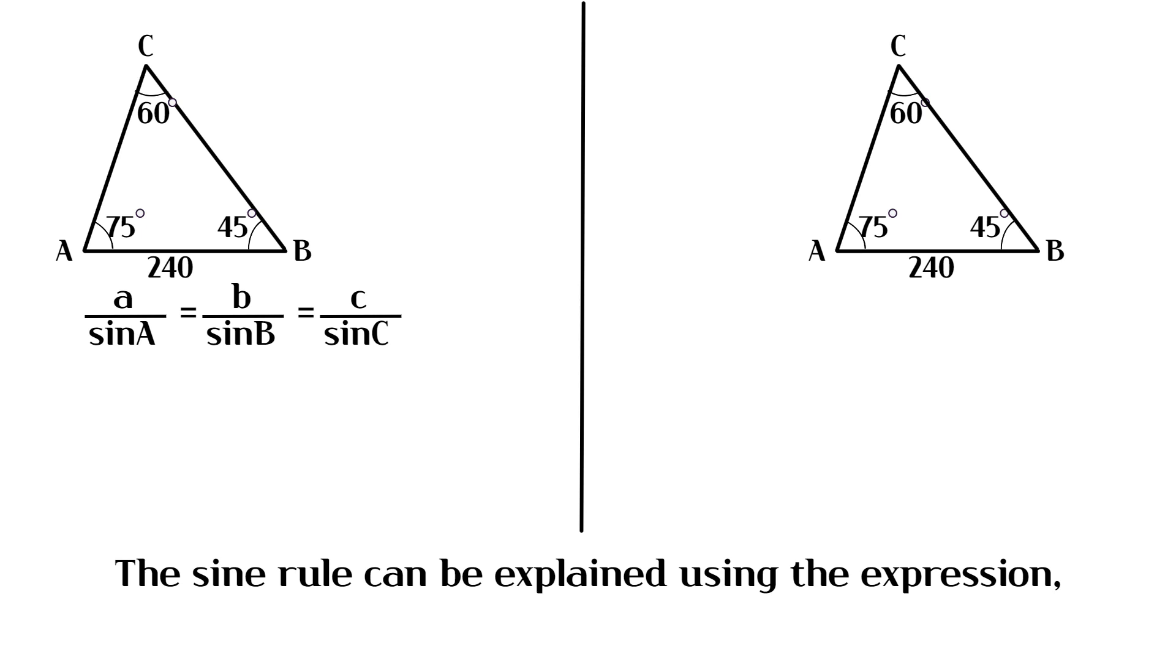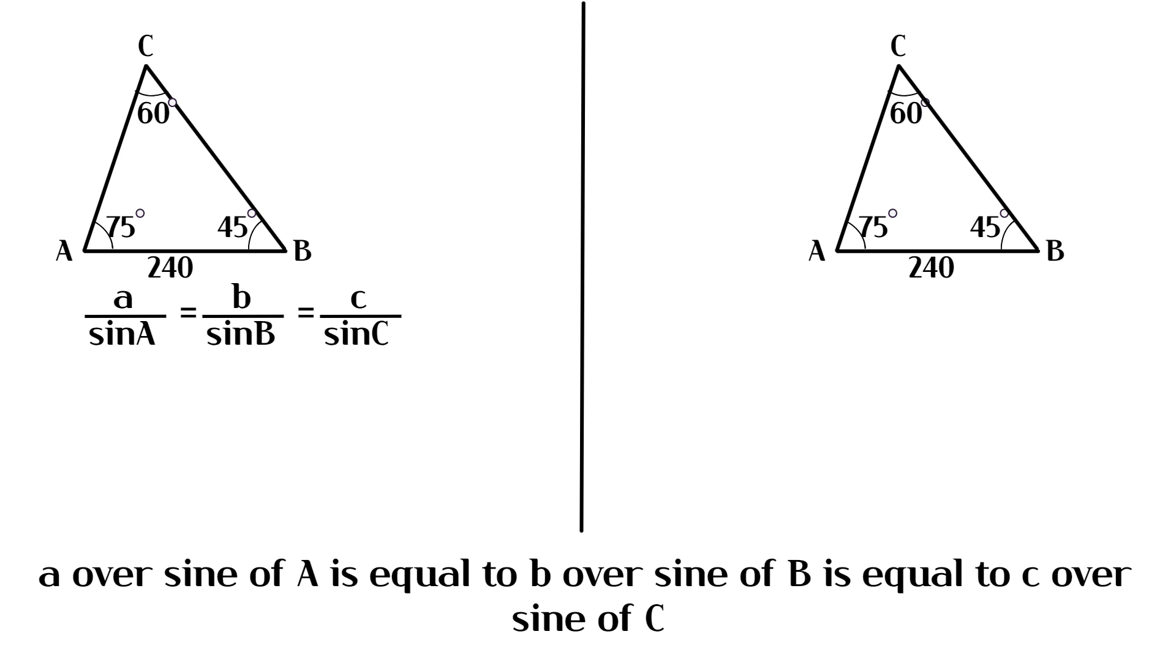The sine rule can be explained using the expression: a over sine of A is equal to b over sine of B is equal to c over sine of C.